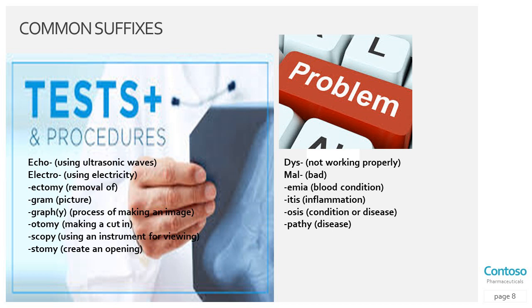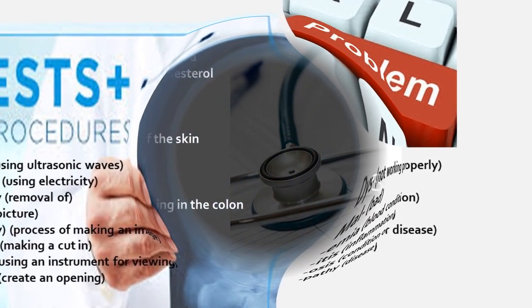For problems: dys means not working properly. Mal means bad, like malpractice. Aemia relates to blood conditions. Itis means inflammation, like dermatitis — inflammation of the skin. Osis means a condition or disease. And pathy also means disease.